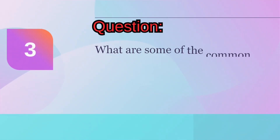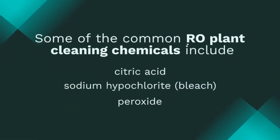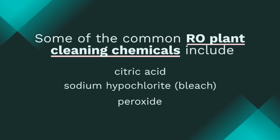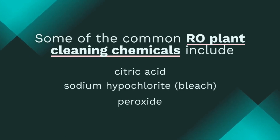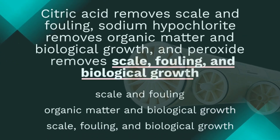Question 3: What are some of the common RO plant cleaning chemicals? Some of the common RO plant cleaning chemicals include citric acid, which is a weak acid used to remove scale and fouling from RO membranes, and sodium hypochlorite, a strong oxidizer used to remove organic matter and biological growth from RO membranes.